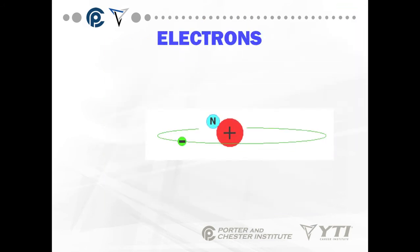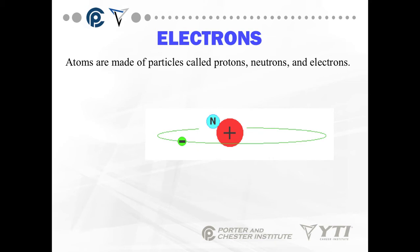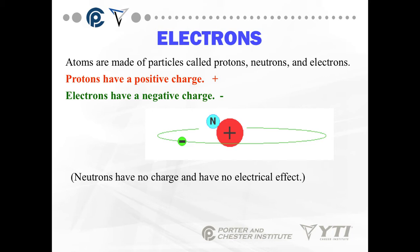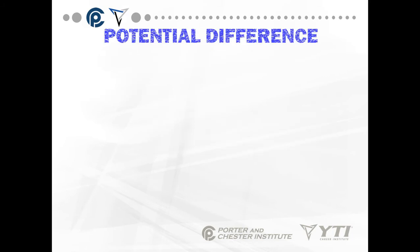Electricity is made up of electrons, protons, and neutrons, which are all part of an atom. Protons have a positive charge, electrons have a negative charge. Neutrons have no charge and have no electrical effect. So we basically have protons that are positive and electrons that are negative.